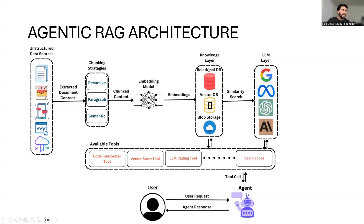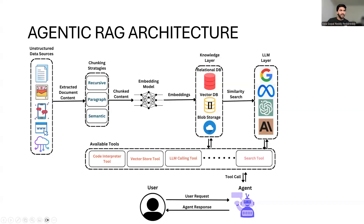We also have the Knowledge Layer, which contains a relational database, blob storage, and vector database. In the relational database we store schemas — essentially the data models. Blob storage holds the actual format of the raw data the user is providing. We also have the LLM Layer where we have foundational models. These generative models can summarize text, translate languages, and answer questions based on user requirements. We also have an available tools layer where many tools that the agent framework will leverage to perform certain functions.